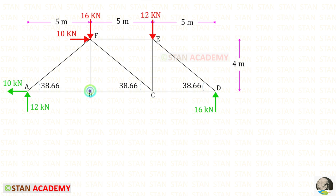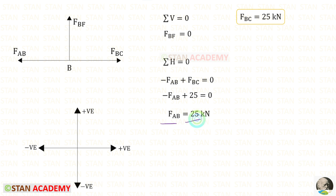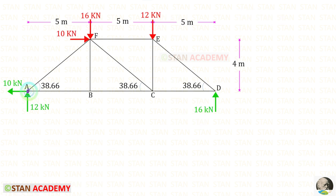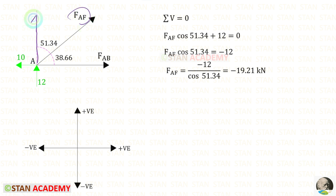Now let us take joint B. In the vertical direction, we have only one member, FBF. So that will be 0. Let us apply sigma H equals 0. FBC is acting towards the left side, so it will be negative. FAB is acting towards the right side, so it will be positive. For FAB, we will get 25 kN. Now we are going to take joint A. FAB we have already found. We have to only find FAF. Using sigma V equals 0, VA is acting upwards, so it will be positive. FAF is inclined; to make it vertical we need 51.34 degrees, so we multiply FAF with cos 51.34. Since it is acting upwards, it will be positive. For FAF, we will get minus 19.21.